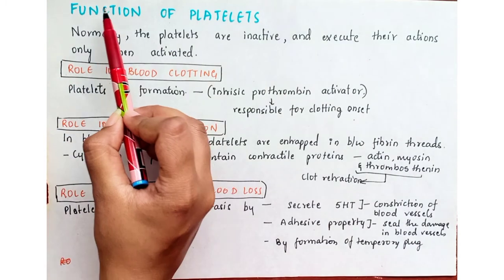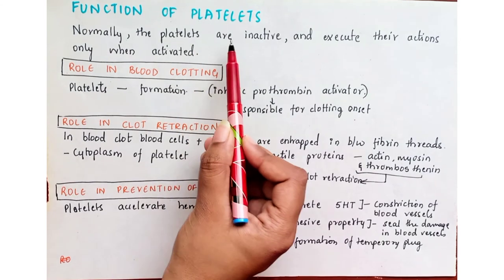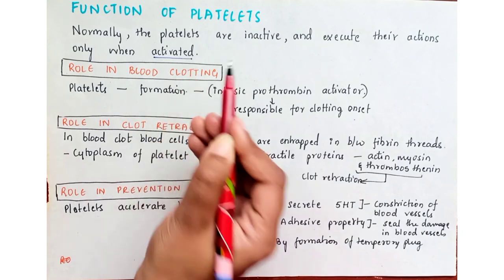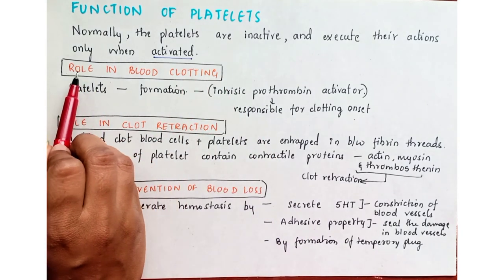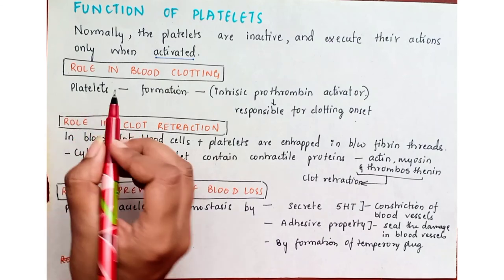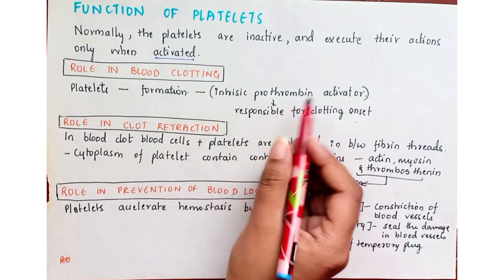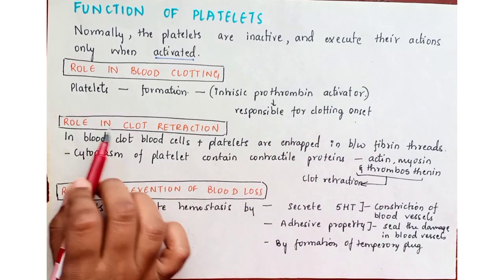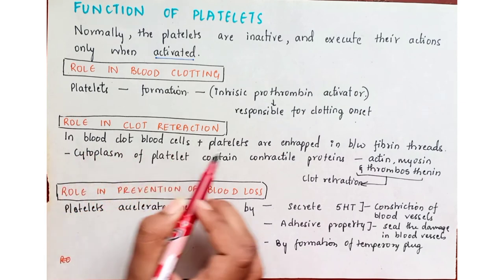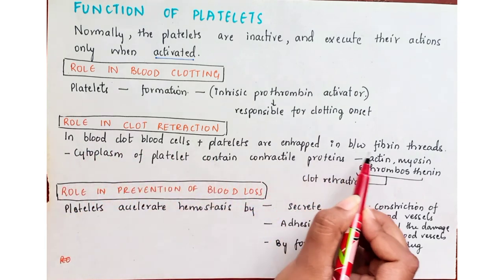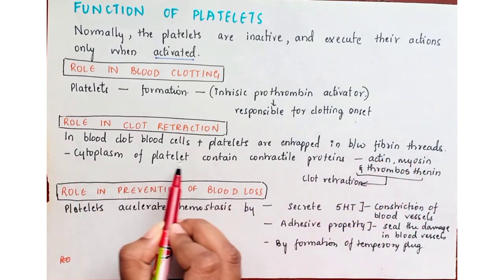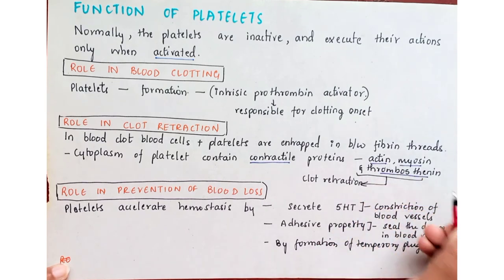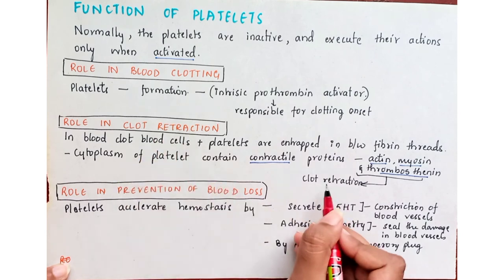Normally platelets are inactive and execute their actions only when activated. Their first function is role in blood clotting: platelets are responsible for the formation of intrinsic prothrombin activator, which is in turn responsible for clotting onset. Second is role in clot formation: cells and platelets are entrapped between fibrin threads, and contractile proteins in the platelet cytoplasm such as actin, myosin and thrombosthenin help in clot retraction.